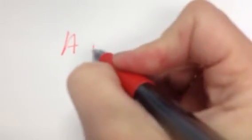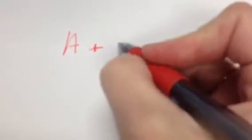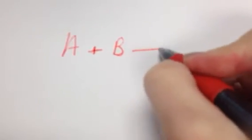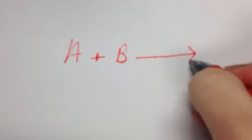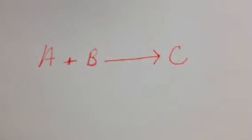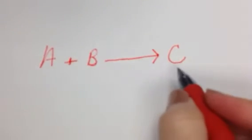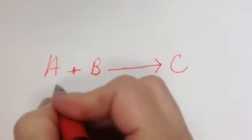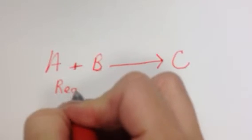I'm going to say we have compound A, we're going to add that to compound B, and that chemical reaction represented by this arrow is going to give us a product that I'm going to call C. So this is a chemical reaction, the letters A and B would be considered reactants.